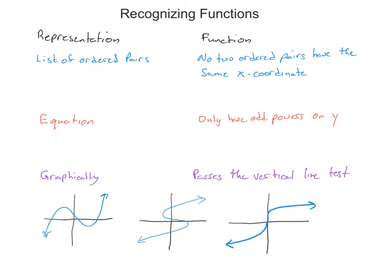For an equation, when determining if it represents a function, the only place you'll have an issue is by looking at the power of y — don't worry about the power on x. In a function, the powers on y will always be odd numbers. If you see y cubed, it's a function. But if you see an even power on y — y squared, y to the fourth — then you're not dealing with a function. Make sure the only powers on y in the problem are odd; then you have a function. If there's one even power of y, you don't have a function.